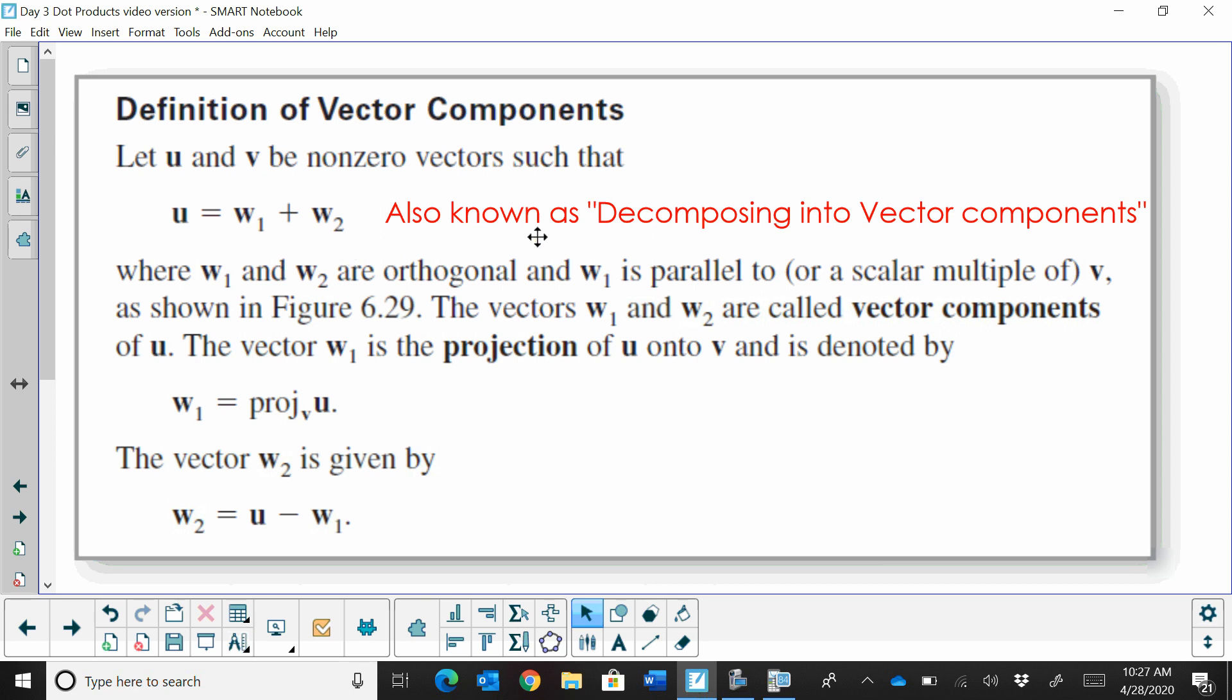This is also known as decomposing into vector components. So we're taking u and dividing it into two smaller parts, where u and w are orthogonal, which also means perpendicular to each other.